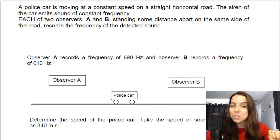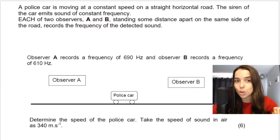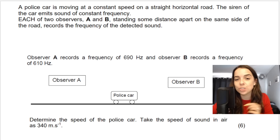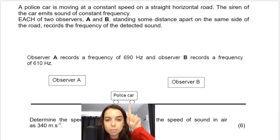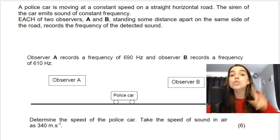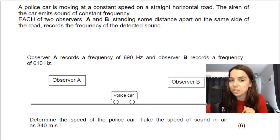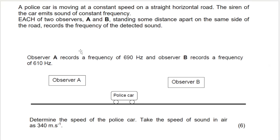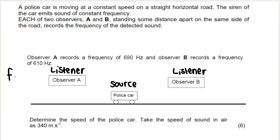So if you take this question, we can see that we have a police car moving at a constant speed on a straight horizontal road. The siren of the car emits sound of a constant frequency, so the police car is the source. Each of the two observers, A and B, standing some distance apart, records the frequencies of the detected sound. The police car is the source — it is what is making the sound. Observer A and observer B are both listeners.